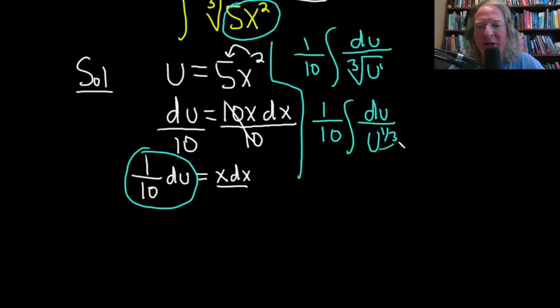And now we can bring it upstairs and make it negative. So it's 1 tenth u to the negative 1 over 3 du. All right.